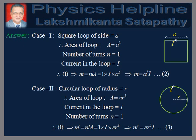Now for the answer. In the first case, we have a square loop of side A as shown in the figure. Therefore, area of the loop is A = A². Number of turns is equal to 1 and the current in the loop is equal to I. Putting these values in equation 1, we get M = NIA = A²I.